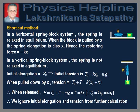To solve the problem, we will use a shortcut method which may be understood as follows. In horizontal spring-block systems, the spring is relaxed in equilibrium. When the block is pulled by distance x, the spring elongation is also x. Therefore, restoring force is equal to minus Kx.